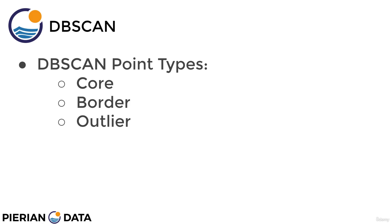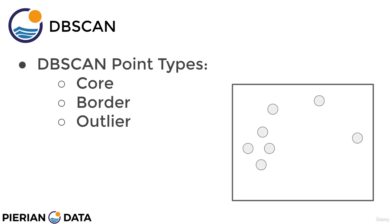Now let's talk about point types and see how epsilon and minimum number of points play into the assignment of point types. There are three main point types to consider when running DBSCAN: a core point, a border point, and an outlier point — which is really interesting because we can already get an intuition that DBSCAN is going to be able to identify outliers automatically. Let's consider an unlabeled dataset and how DBSCAN would approach it to identify clusters and key point types.